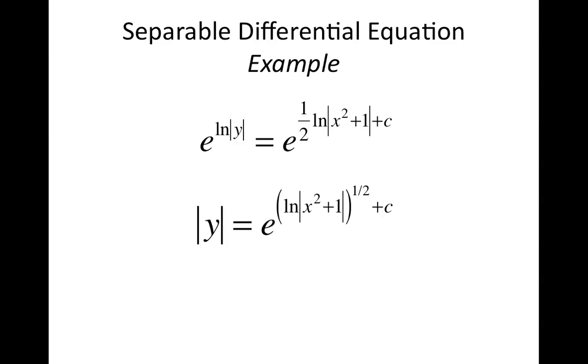E to the ln y simply goes to y, or absolute value of y, which is just simply y. On the right hand side it's a little trickier because we actually have e to the 1 half ln x squared plus 1 plus c. When you have e raised to the ln and there's actually a value outside the ln, you can bring that up as an exponent. That 1 half comes up top and becomes ln x squared plus 1 all raised to the 1 half. Plus c is still associated with that same argument raised to the e.